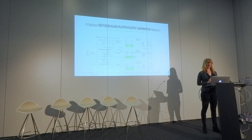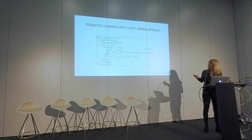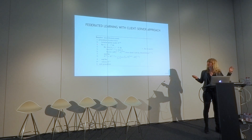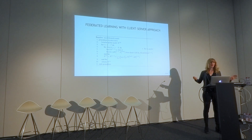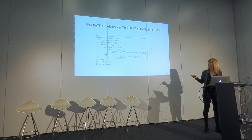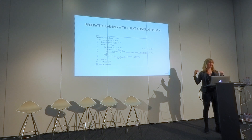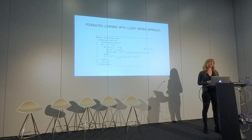Very quickly, how the algorithm looks in theory: we initialize the global model stored in the federated server. Then we iterate until convergence, as in all AI training. The global model is sent to the local clients — the hospitals. They do local training, then we receive the updates from the local training and update the global model, incorporating also the bias. This iteration continues until convergence.